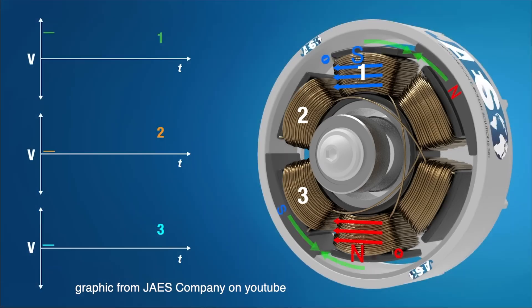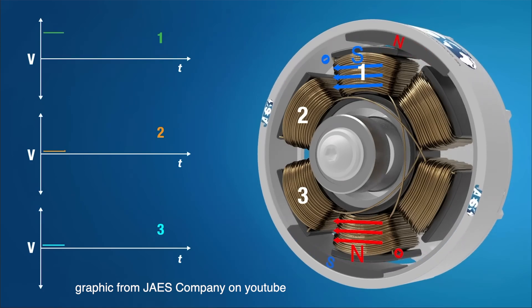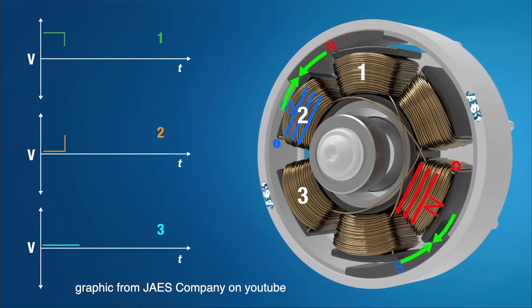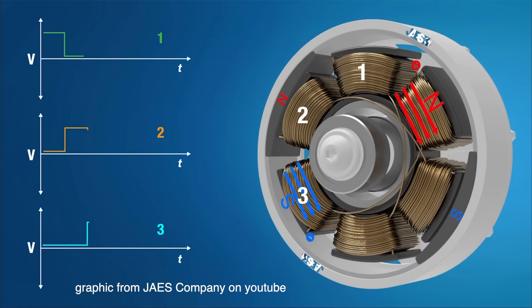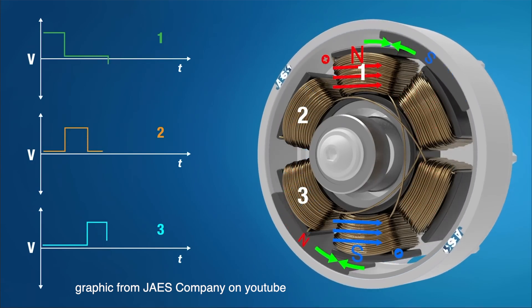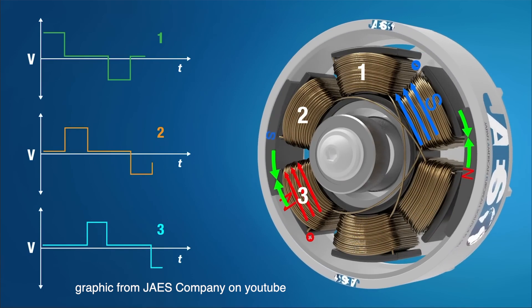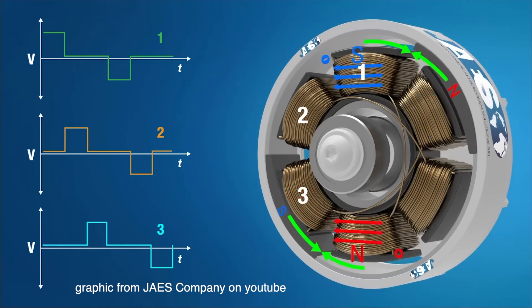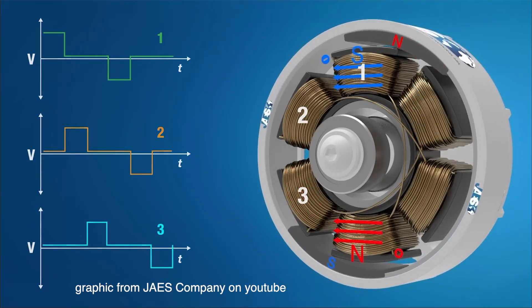Whenever one of these windings are energized it creates a magnetic field like an electromagnet. At any given moment two of these three wires conduct current to create an electromagnetic field within a set of windings while the third remains inactive. By changing which two wires have current we can change which set of windings produce a magnetic field. By changing this quickly we can create a magnetic field that basically moves in a circle throughout the motor.